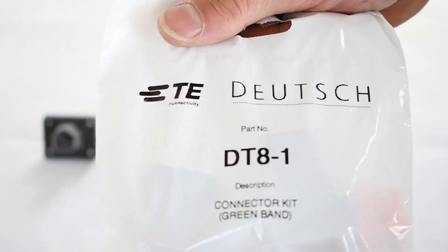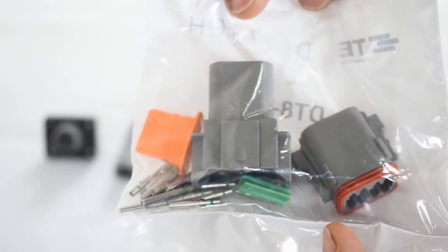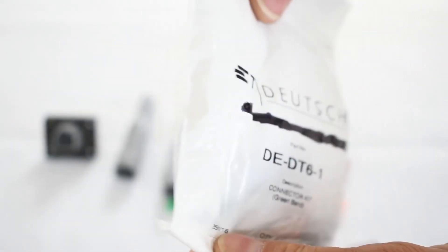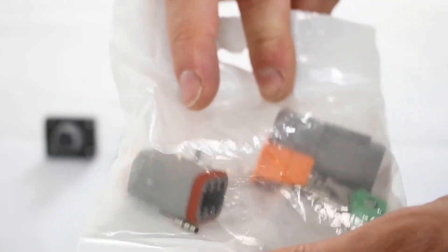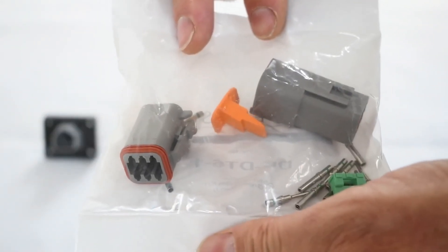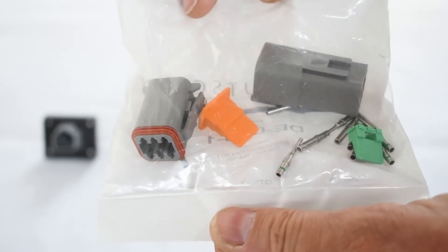Okay. New 8-Way. Deutsch DT 8-1. So there's your 8-Way receptacle plug, wedge locks, and contacts to suit. So we have these in the full range. It's the Deutsch DT 6-1. Again, the plug, socket, wedge locks, contacts to suit.